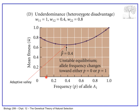If A1 is at low frequency, say 0.10, then A2 is at 0.9. Relative fitnesses are: A1A1 homozygote is most fit at 1.0, A2A2 homozygote has 0.8 relative fitness, and heterozygotes have 0.4 relative fitness. With A1 at 0.1, most individuals are A2A2 homozygotes, but the population is not as fit as it might be if most individuals were A1A1 homozygotes, which requires A1 to be the most abundant allele.